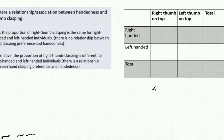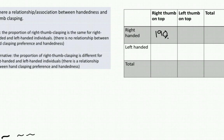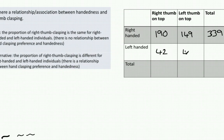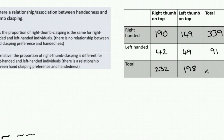We've now formed our two hypotheses, and it's time to start collecting some data. Let's imagine we've gone and surveyed some of the population. We indicate the number of individuals that fall into each of these four categories. 190 individuals were right-handed with the right thumb on top; 149 were right-handed with left thumb on top, giving a total of 339. 42 individuals were left-handed with the right thumb on top, and 49 were left-handed with left thumb on top, giving a total of 91 left-handed. That also gives us 232 individuals who preferred the right thumb on top, and 198 with the left thumb on top.